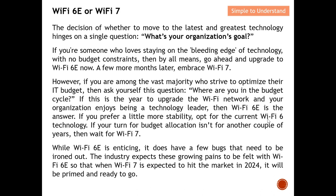If you prefer a little more stability, you can opt for the current Wi-Fi 6 — it is already very stable. If your budget allocation isn't available for another couple of years, then wait for Wi-Fi 7; by that time it will be very stable. Wi-Fi 6E is still enhancing and will have a few bugs to iron out, but the industry expects these growing pains with 6E so that when Wi-Fi 7 hits the market it will be prime and ready to go.